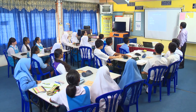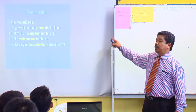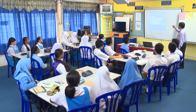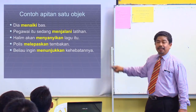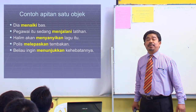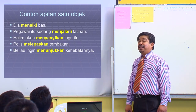Contoh dalam ayat: Dia menaiki bas - satu objek. Pegawai itu sedang menjalani latihan - satu objek. Halim akan menyanyikan lagu itu - satu objek. Polis melepaskan tembakan - satu objek. Beliau ingin menunjukkan kehebatannya - satu objek. Semua ayat ini menggunakan apitan dengan satu objek sahaja.